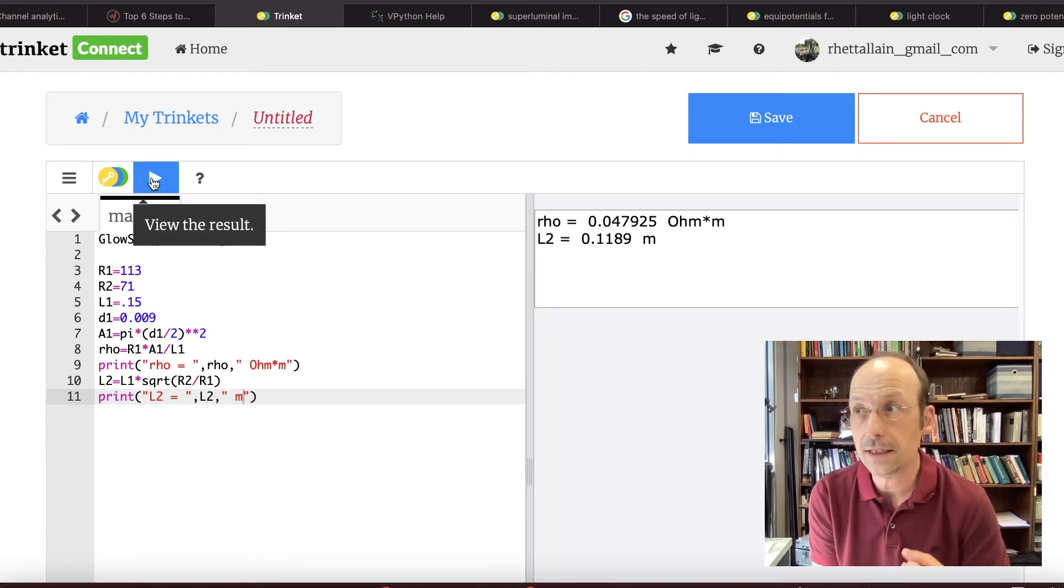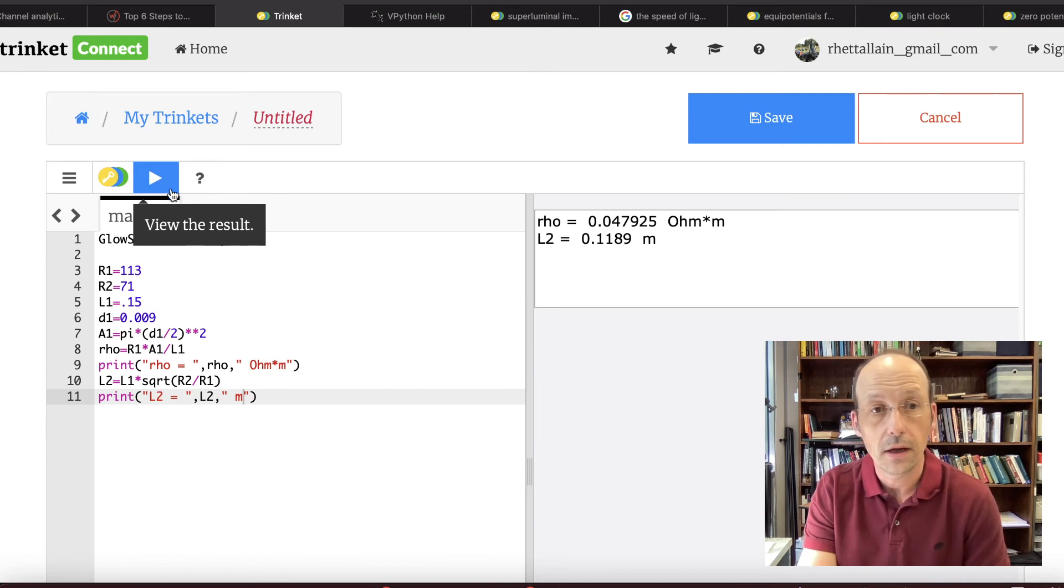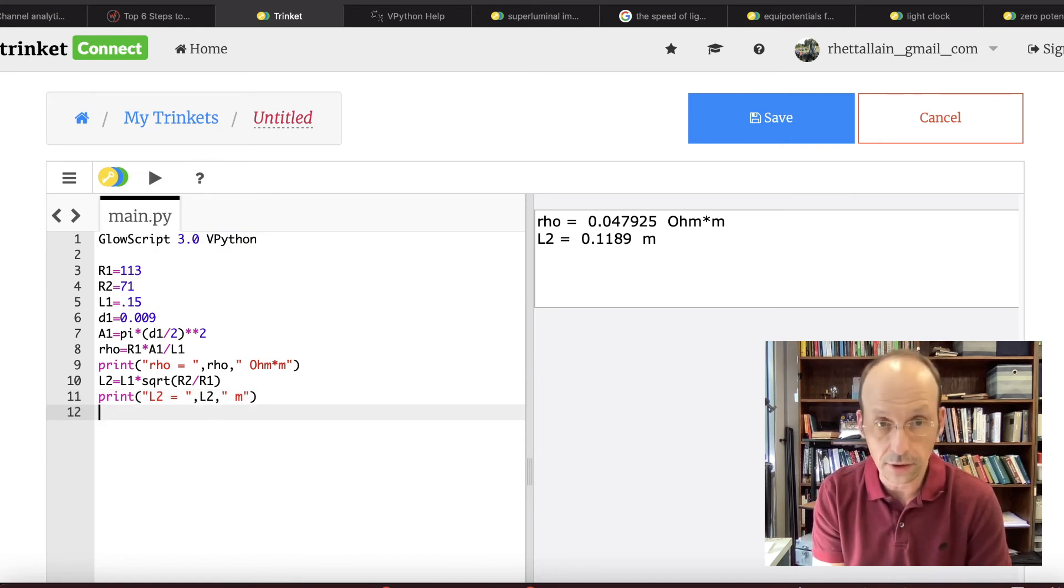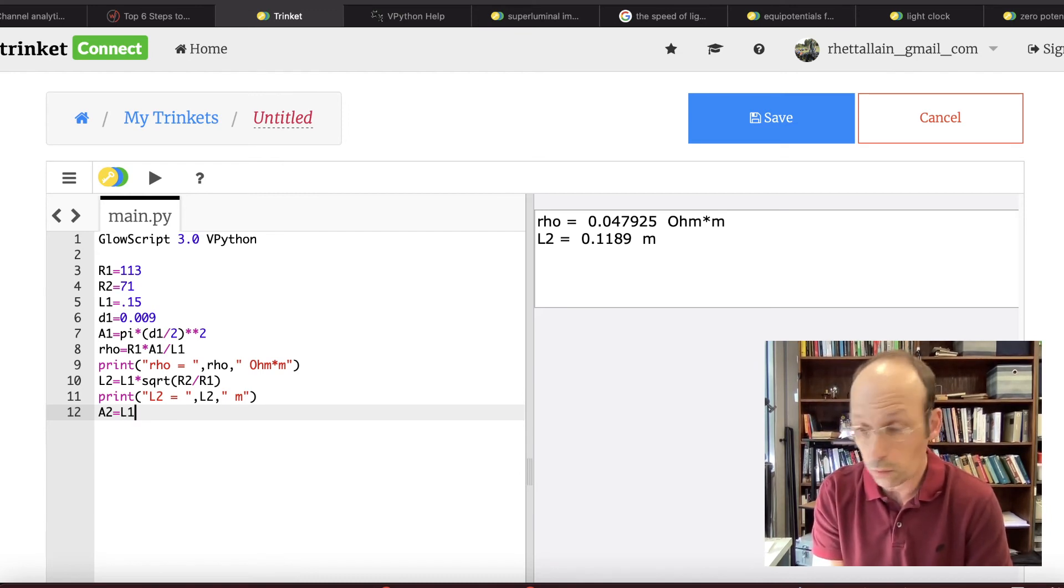So it is indeed shorter, which makes sense. If I want to decrease the resistance I need a shorter wire. Now let's go ahead and calculate the area just for fun. And I use my equation A2 equals L1 times A1 divided by L2.